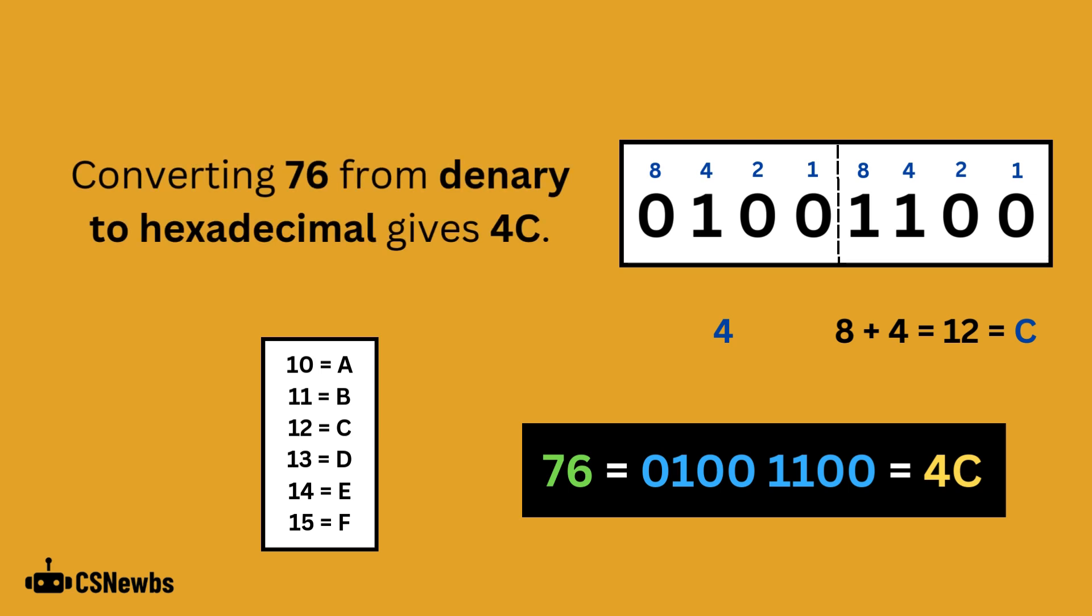The final conversion is now complete. 76 was converted into binary to make 01001100. This was then converted into hexadecimal to give 4C.